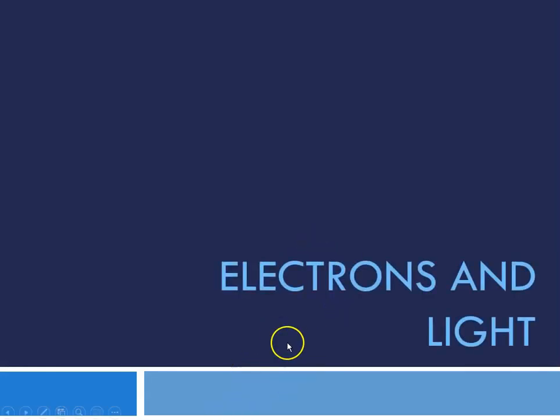Hello class, this is Miss Augustine, and today we are going to talk about electrons and light, which is Chapter 13, Section 3.